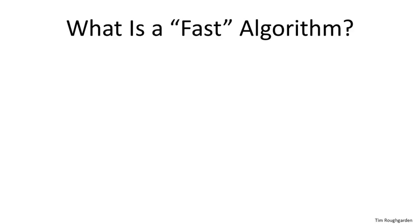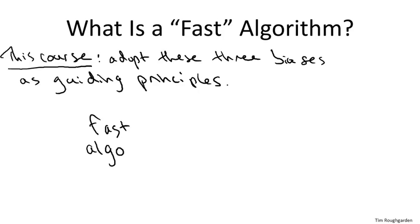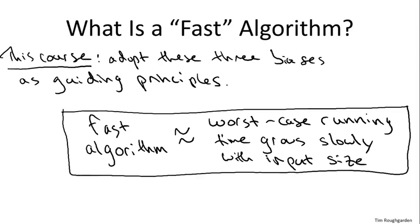So to review, our first guiding principle is that we're going to pursue worst case analysis. We're going to look to bounds on the performance, on the running time of an algorithm, which make no domain assumptions, which make no assumptions about which input of a given length the algorithm is provided. The second guiding principle is we're not going to focus on constant factors or lower order terms. That would be inappropriate given the level of granularity at which we're describing algorithms. And third is we're going to focus on the rate of growth of algorithms for large problem sizes. Putting these three principles together, we get a mathematical definition of a fast algorithm. Namely, we're going to pursue algorithms whose worst case running time grows slowly as a function of the input size.